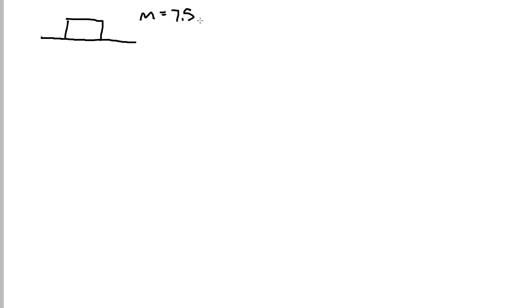This video tutorial is meant to help you for your friction quiz tomorrow. Let's say that we've got a flat surface and a box with a mass of 7.5 kilos. We're pulling this box in the positive x direction — taking right as positive — with a force pull of 5 Newtons in the positive x direction.